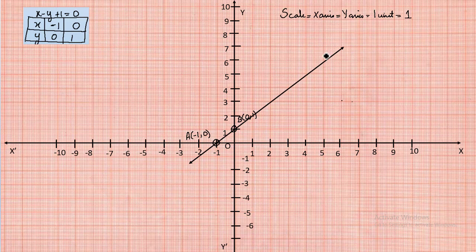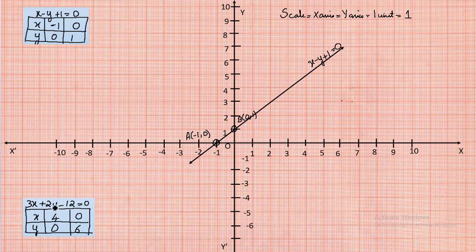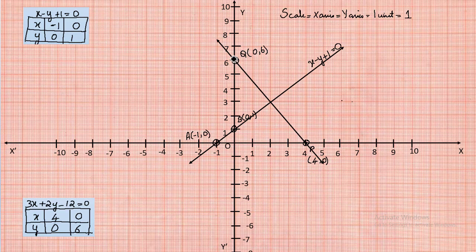Similarly, for equation 2 (3x + 2y − 12 = 0), at x = 4 and y = 0 we mark point P, and at x = 0 and y = 6 we mark point Q. We join points P and Q with a line representing this equation.